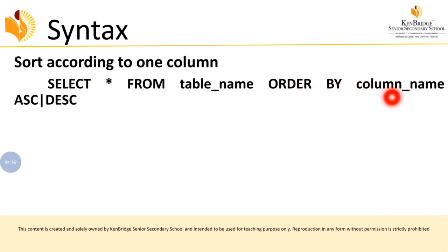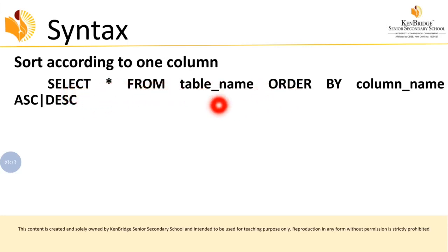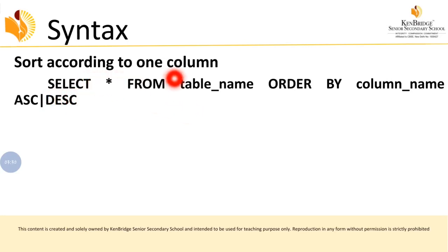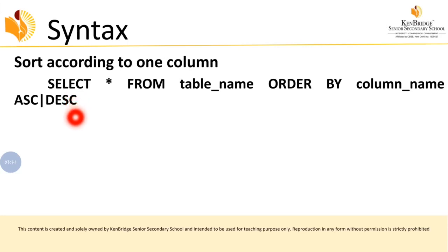For example, if you have a student table and you need student names in ascending order, you can write: SELECT student_name FROM student ORDER BY student_name ASC. Ascending order means A to Z, and descending order means Z to A. After the column name you must mention the sorting order — whether ascending or descending.